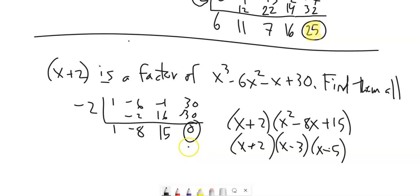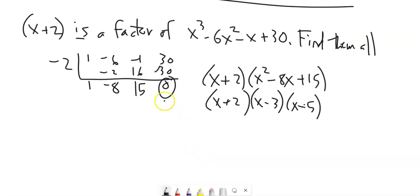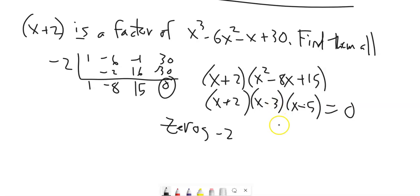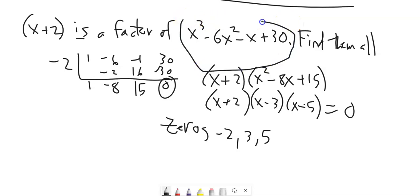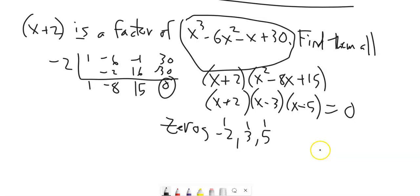I can go a step further. The zeros of this function — when it equals zero — are: what makes x plus 2 zero? Negative 2. What makes x minus 3 zero? 3. What makes x minus 5 zero? 5. In other words, if I were to graph this, it would have x-intercepts at negative 2, 3, and 5. Finding all these zeros is what this section is all about.